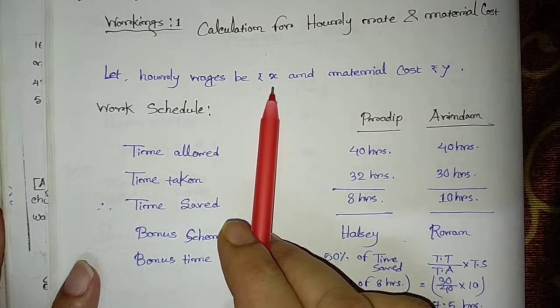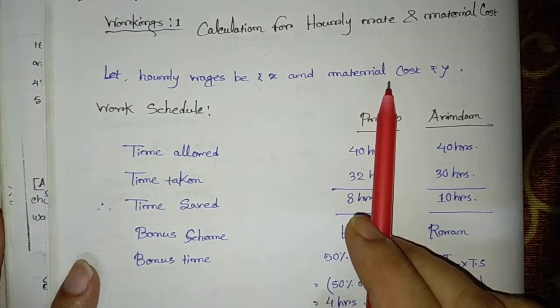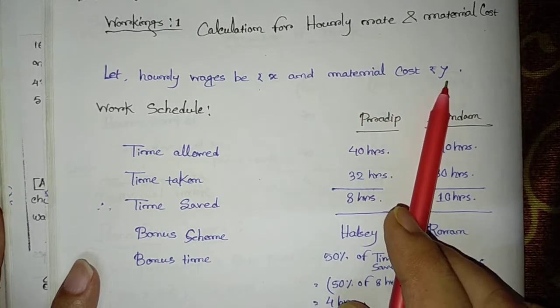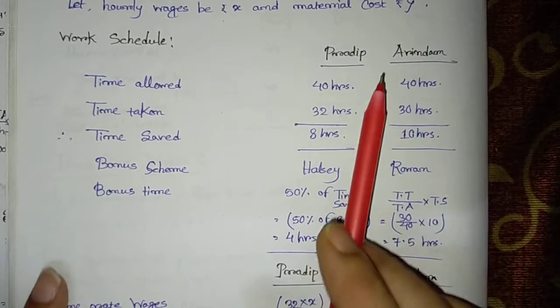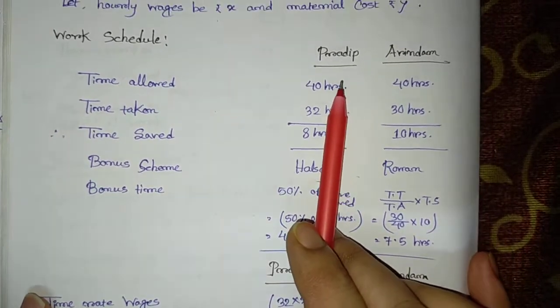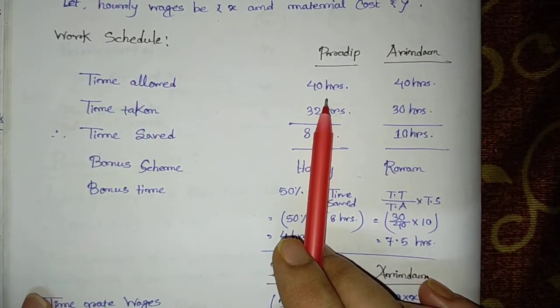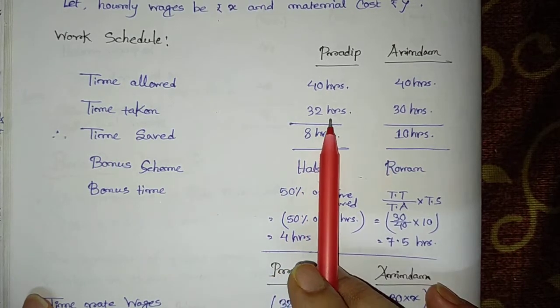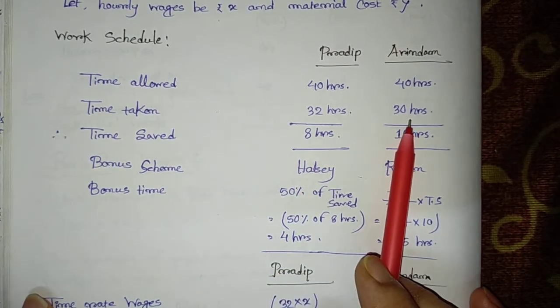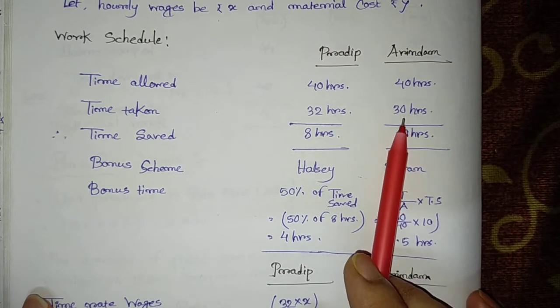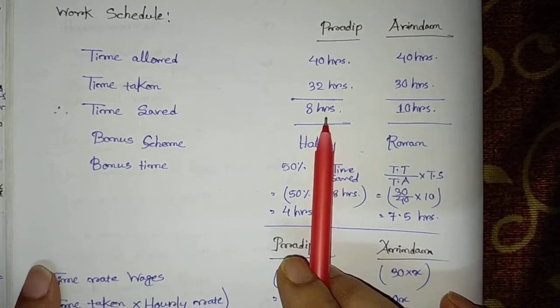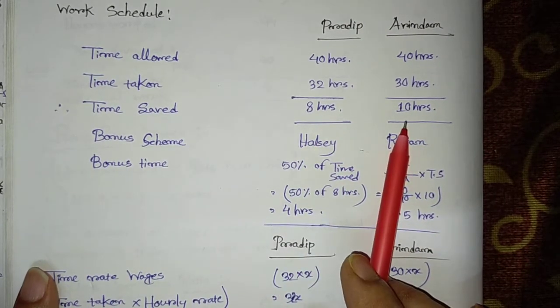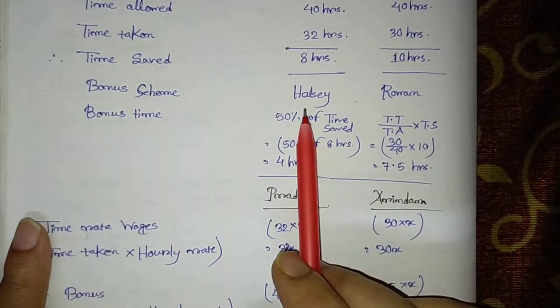Let wage rate be Rs. x and material cost be Rs. y. Now, I have set up the work schedule. For Pradeep, time allowed for both workers is 40 hours. Time taken for Pradeep is 32 hours and Aurindam is 30 hours. Therefore, time saved for Pradeep is 8 hours and for Aurindam is 10 hours.